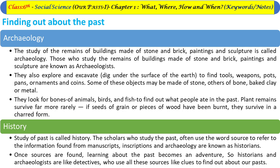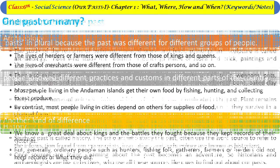The study of the past is called history. Scholars who study the past use the word 'source' to refer to information found from manuscripts, inscriptions, and archaeology — they are known as historians. Once sources are found, learning about the past becomes an adventure, so historians and archaeologists are like detectives who use all these sources as clues to find out about our past.